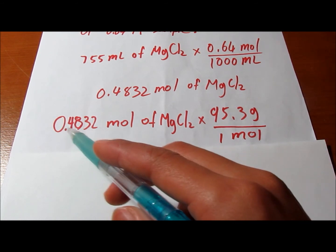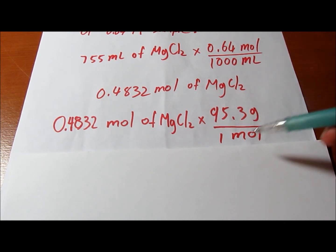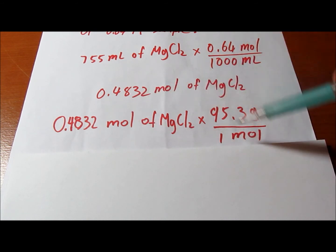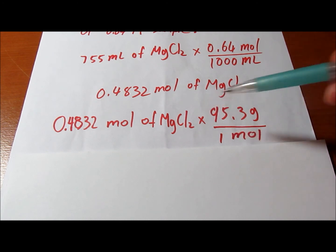And we would use our calculated answer and times it by 95.3 grams over 1 mole. Now we do this because we can cross out the moles and we will only be left with the grams of magnesium chloride.